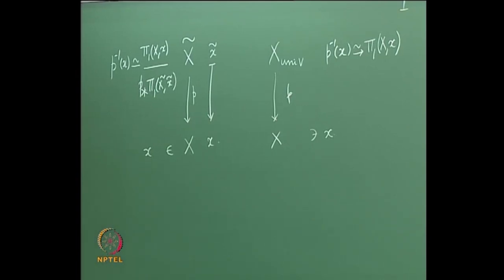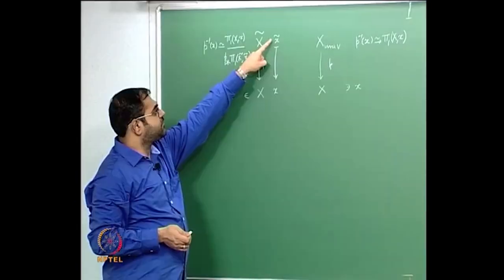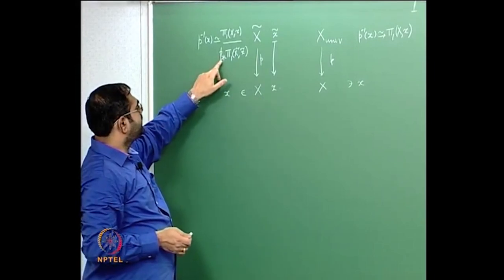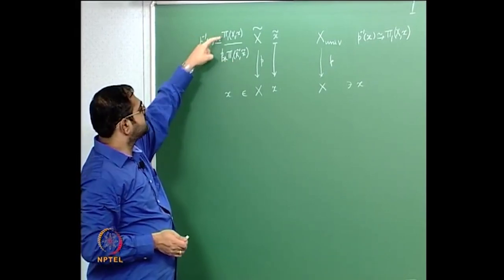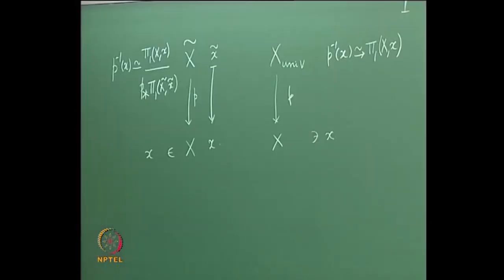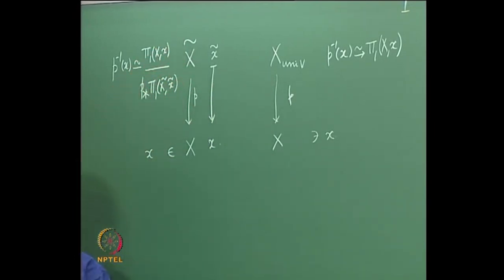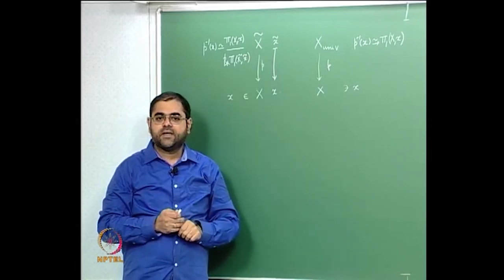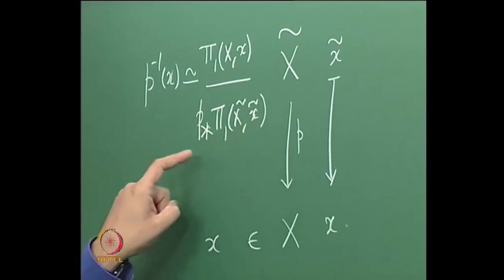So each fiber looks like this coset space, and p★ — the group homomorphism from the fundamental group above to the fundamental group below — was an injective homomorphism. Therefore p★ of the fundamental group above was a subgroup of the fundamental group below, and this coset space turned out to be canonically identifiable with the fiber. As a special case, when X̃ is the universal covering, the covering space is simply connected, so the fundamental group is trivial, and you get this directly.